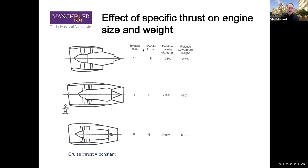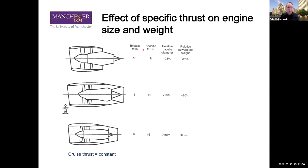Question five: what happens if you increase overall pressure ratio without increasing turbine entry temperature? The answer is you can't add enough fuel. As we increase OPR we compress the air more and raise its temperature. Turbine inlet temperature is the temperature exiting the combustor — if we don't raise that, the temperature difference across the combustor is very small, meaning we can't burn sufficient fuel.